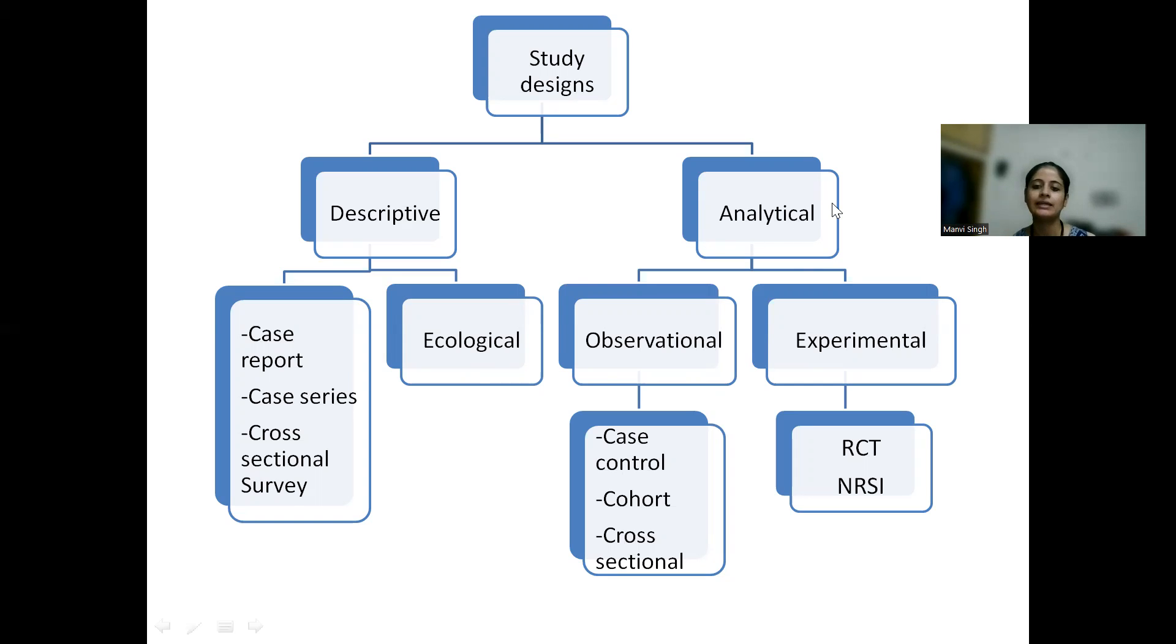Coming to analytical studies, in which we have two groups, they may be observational, in which no intervention is done, or experimental, in which the researcher will actively conduct the intervention. These are further subdivided. Observational studies are case control, cohort, and cross-sectional studies, and experimental studies are RCTs and non-randomized studies of intervention. We will not be talking about analytical study designs in this talk. We will restrict ourselves only to descriptive study designs. Analytical study designs will be taken up in the next session.